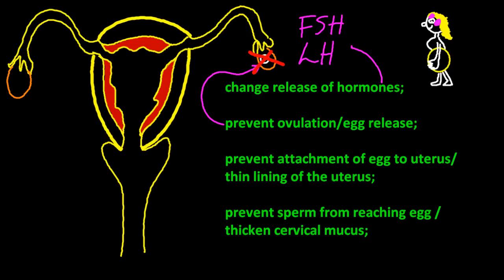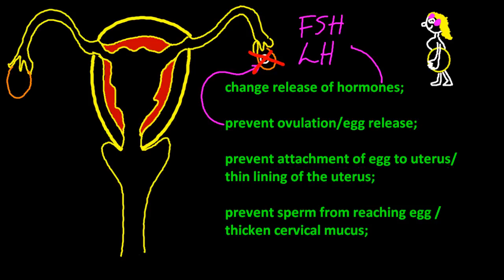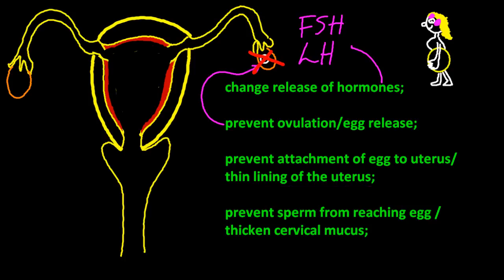As a third point: preventing attachment of the egg to the uterus. You could give the reason — the thin lining of the uterus. That's enough to get the second point. The lining of the uterus is thin, that's why the egg won't attach. And instead of saying lining of the uterus, you could use the word endometrium, which is the proper word. But again, only what's in green do you need to know.